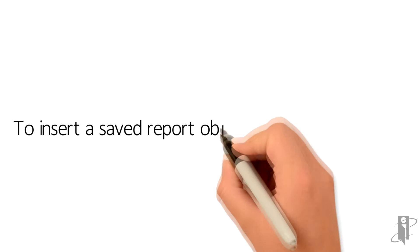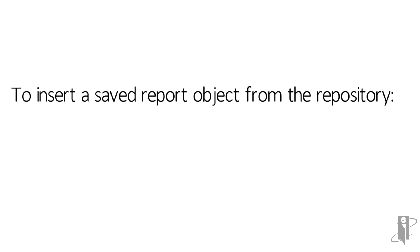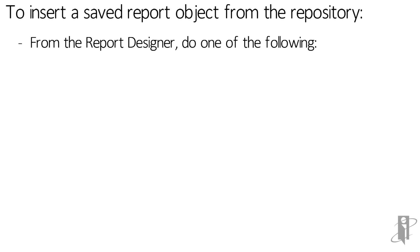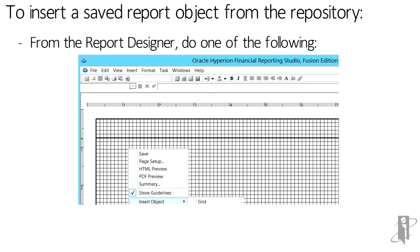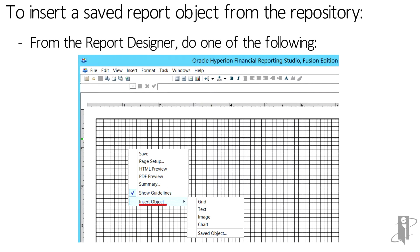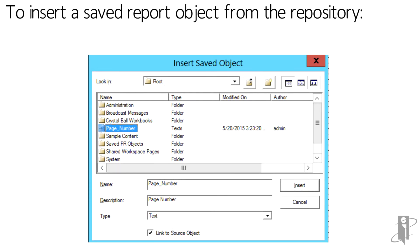To insert a saved report object from the repository, first begin from the report designer and do one of the following: select Insert and then Saved Object, or right-click and select Insert Object and then Saved Object. In the Insert Saved Object dialog box, specify the object to insert. If desired, select Link to Source Object to link the saved object to the source object. Finally, click Insert.